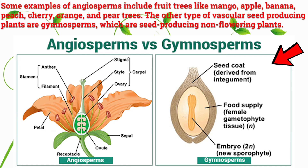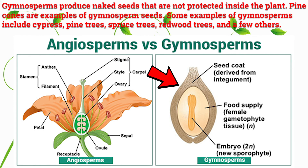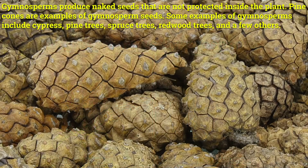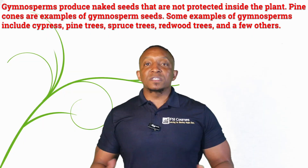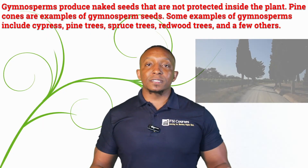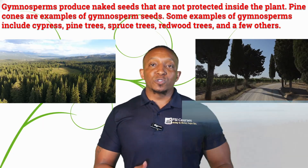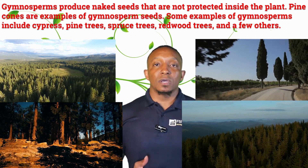The other type of vascular seed-producing plants are gymnosperms, which are seed-producing non-flowering plants. Gymnosperms produce naked seeds that are not protected inside the plant. Pine cones are examples of gymnosperm seeds. Some examples of gymnosperms include cypress, pine trees, spruce trees, redwood trees, and a few others.